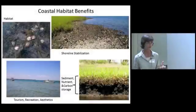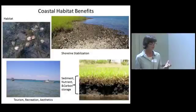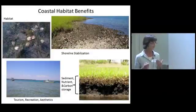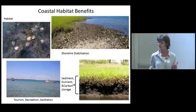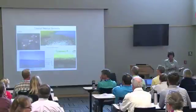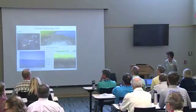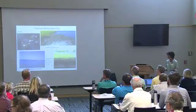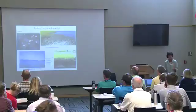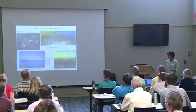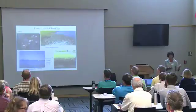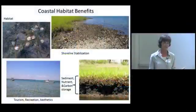Ecosystem services is the idea that these habitats do things that we value. They provide fisheries habitat — habitat for clams, shrimp, and crabs. They provide important nursery habitat for larval fish that grow into adults. They provide shoreline stabilization, hold the shoreline together, attenuate wave energy, and offer recreation opportunities. They're also aesthetically pleasing.